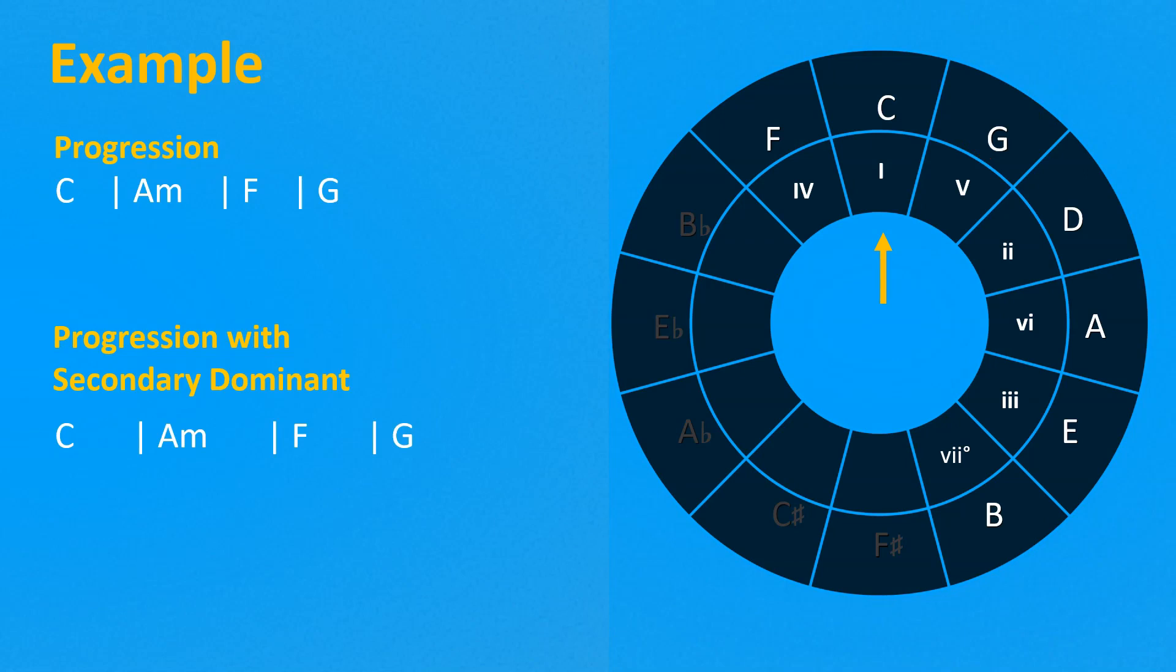Now let's use the secondary dominant to get to each chord. We can get the secondary dominant of A minor just looking on the right of A, so the secondary dominant is E7. Let's go on. The secondary dominant of F is C7 and the secondary dominant of G is D7.